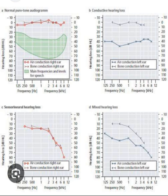SRT involves the presentation of two-syllable words with equal emphasis on both syllables, requiring the patient to repeat the word correctly. This type of word is known as a spondee; examples include race car, baseball, and toothbrush. The SAT is usually within 10 to 15 decibels of the SRT, and the PTA and SRT should fall within 6 to 12 decibels of each other.